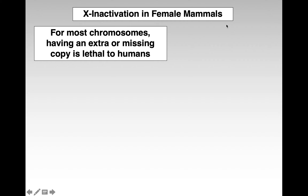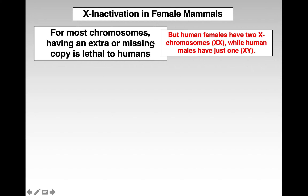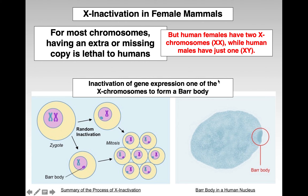One thing to think about with sex chromosomes is X-inactivation. This occurs in female mammals. For most chromosomes, having an extra or missing copy is lethal. Human females have two X chromosomes but males only have one, leading to a discrepancy. So in female mammals, one of the X chromosomes gets inactivated so that males and females have equivalent gene expression. The X inactivation shuts down one X chromosome, and it becomes what's called a Barr body, so you only get gene expression from one of those chromosomes.